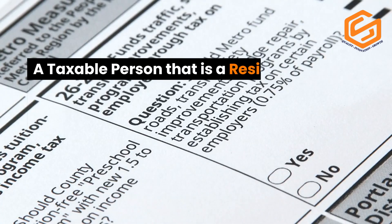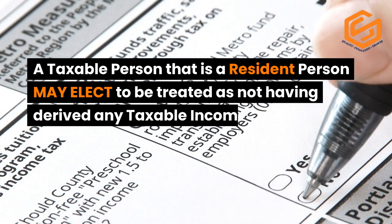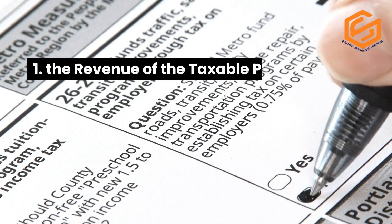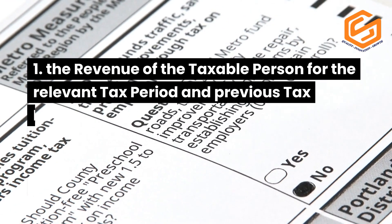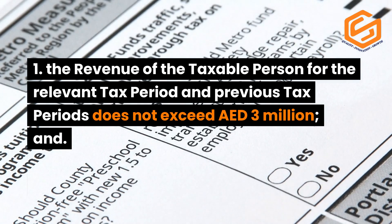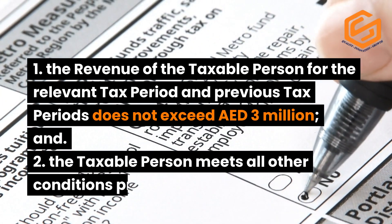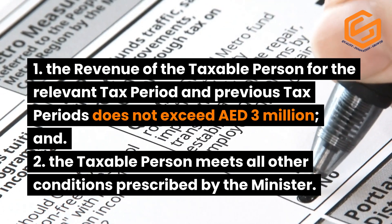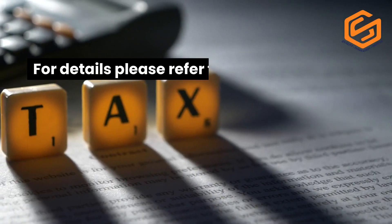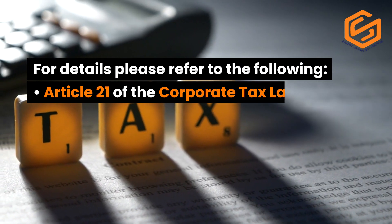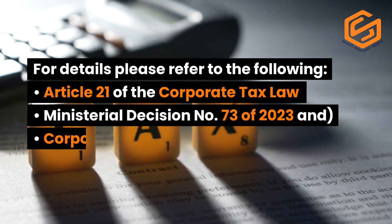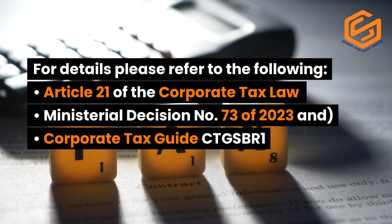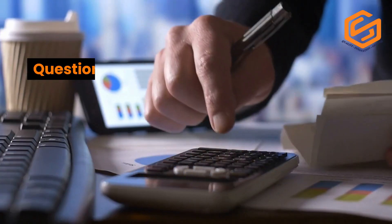A taxable person that is a resident person may elect to be treated as not having derived any taxable income for a tax period where: (1) the revenue of the taxable person for the relevant tax period and previous tax periods does not exceed 3 million Emirati dirhams, and (2) the taxable person meets all other conditions prescribed by the Minister. For details, please refer to Article 21 of the Corporate Tax Law, Ministerial Decision No. 73 of 2023, and Corporate Tax Guide CTGSBR1.